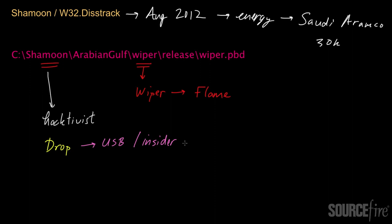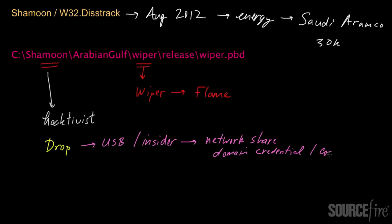Once it was in the environment and had infected that first system — patient zero — it spread through the environment via network shares. What's particularly interesting is that the authors of Shamoon appear to have already had access to domain credentials and the domain controller itself, which allowed the malware to spread more rapidly and easily. This was another sign the threat was being perpetrated by insiders.